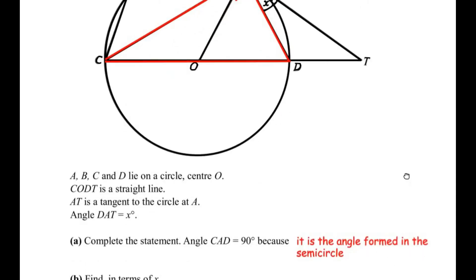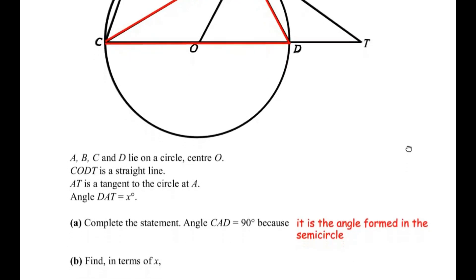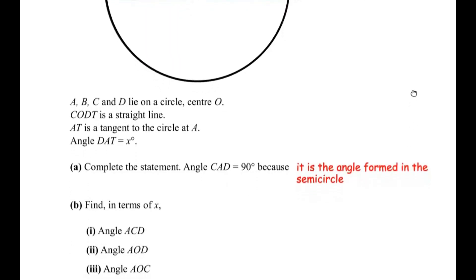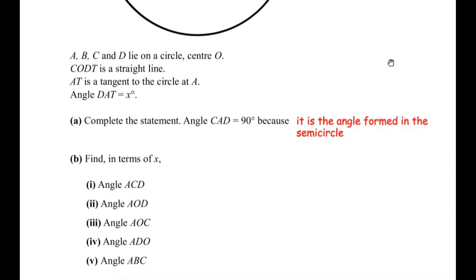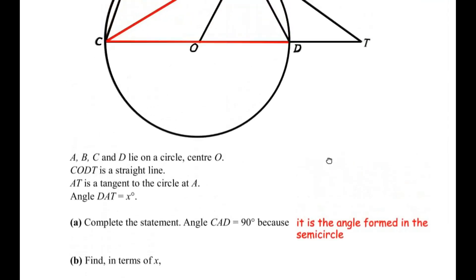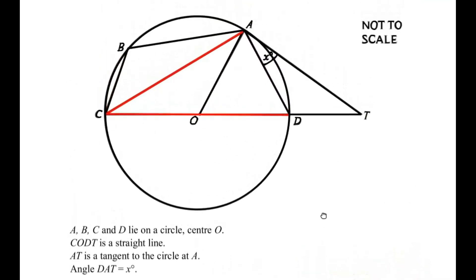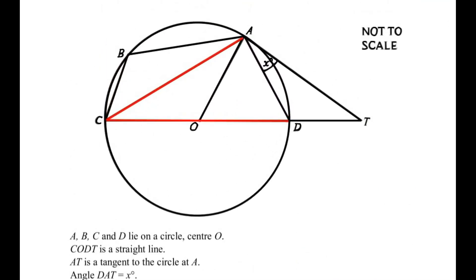Now let us move on to the second sub question: find in terms of x. These are all the angles which we need to find in terms of x. Let us start with the first one, that is angle A, C, D — this is the angle which we need to find in terms of x.